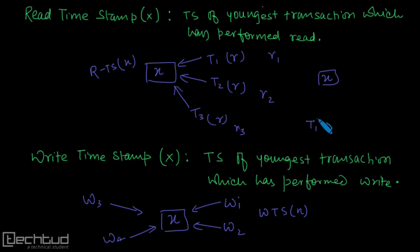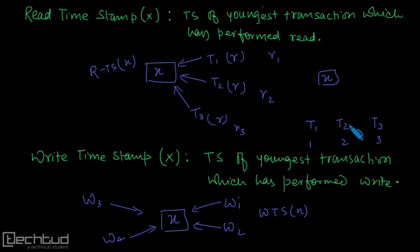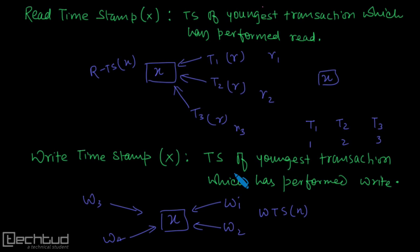We assign T1 a timestamp value of 1, T2 gets 2, T3 gets 3. As the timestamp value increases with time, the youngest or latest transaction will have the largest timestamp value. This is the write timestamp.